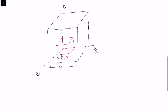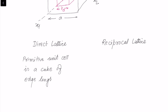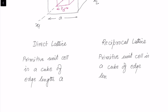We can summarize our findings: the direct lattice primitive unit cell is a cube of edge length a, and the reciprocal lattice primitive unit cell is also a cube, but with edge length 1/a. The volume of the reciprocal lattice unit cell v star is therefore 1/a cubed.